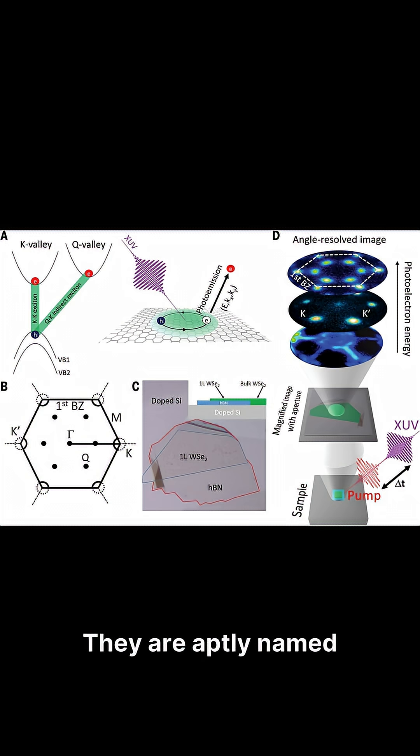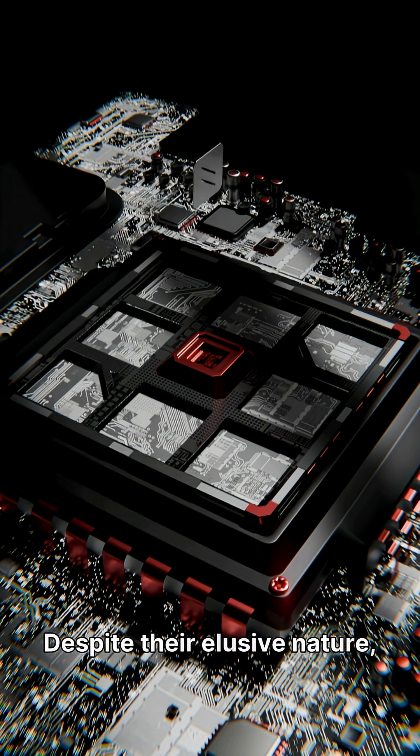They are aptly named dark because they emit very little light, making them incredibly challenging to observe, study, or control effectively.